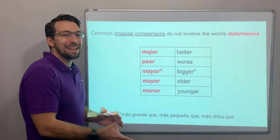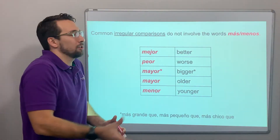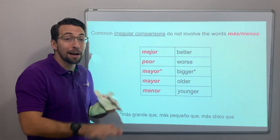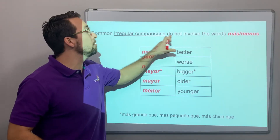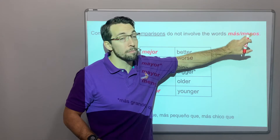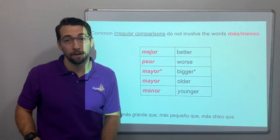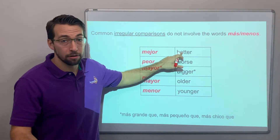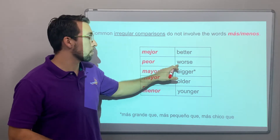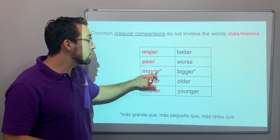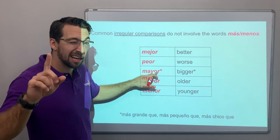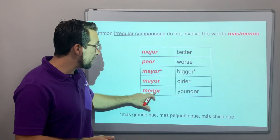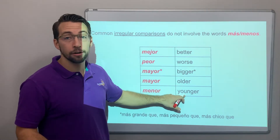Here are some irregular comparisons. Common irregular comparisons break the formula — they do not involve más or menos. You don't say them. So: mejor is 'better,' peor is 'worse,' mayor — we'll get to it — is 'bigger' or 'older,' and menor is 'younger.'